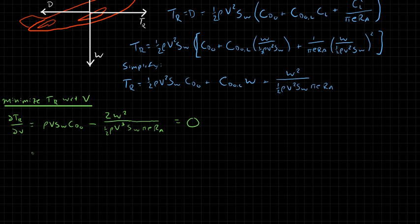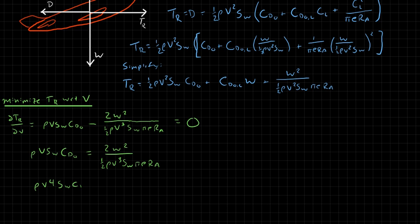Bringing the negative term to the other side gives: rho v S_w C_D0 equals 2W-squared over (one-half rho v-cubed S_w pi e RA). Multiplying both sides by v-cubed: rho v-to-the-fourth S_w C_D0 equals 2W-squared over (one-half rho S_w pi e RA).